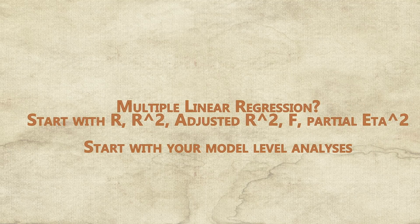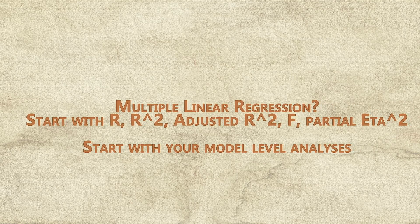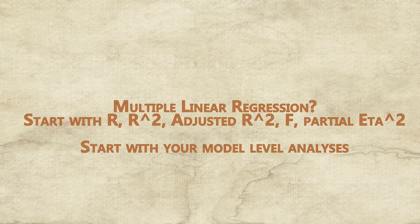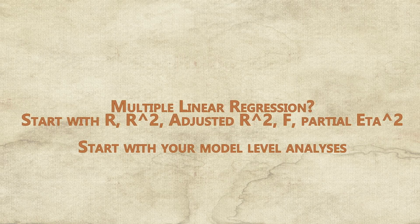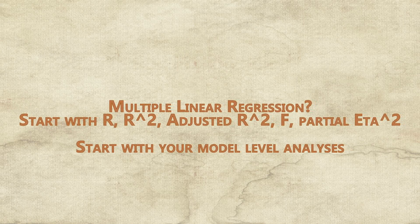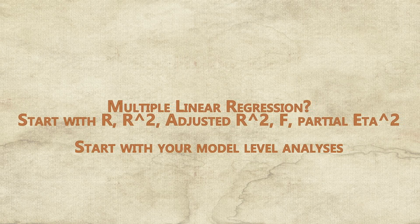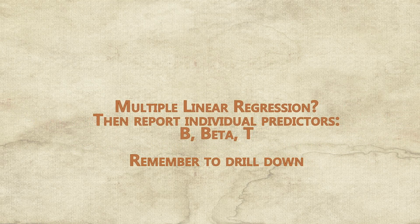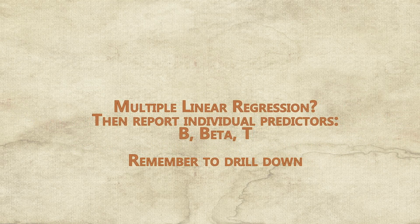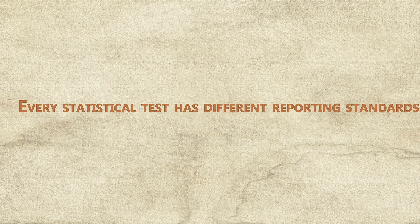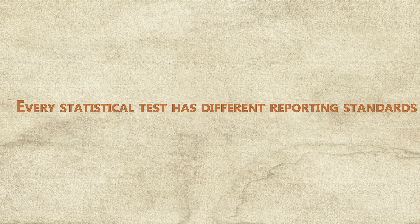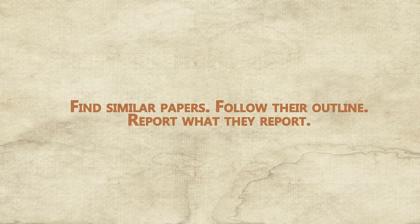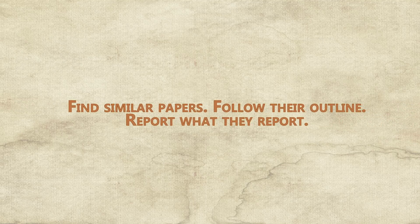If you're talking about a multiple linear regression, make sure that you're talking about the overall model first and reporting those statistics first. That will be R, R-squared, adjusted R-squared, before you start talking about individual level predictors, like B, beta, T, and so on. Each test has a profile of things that need to be reported — you just have to know what those are. And the best way to get as close as possible is to find another paper that used the same test and follow their outline.